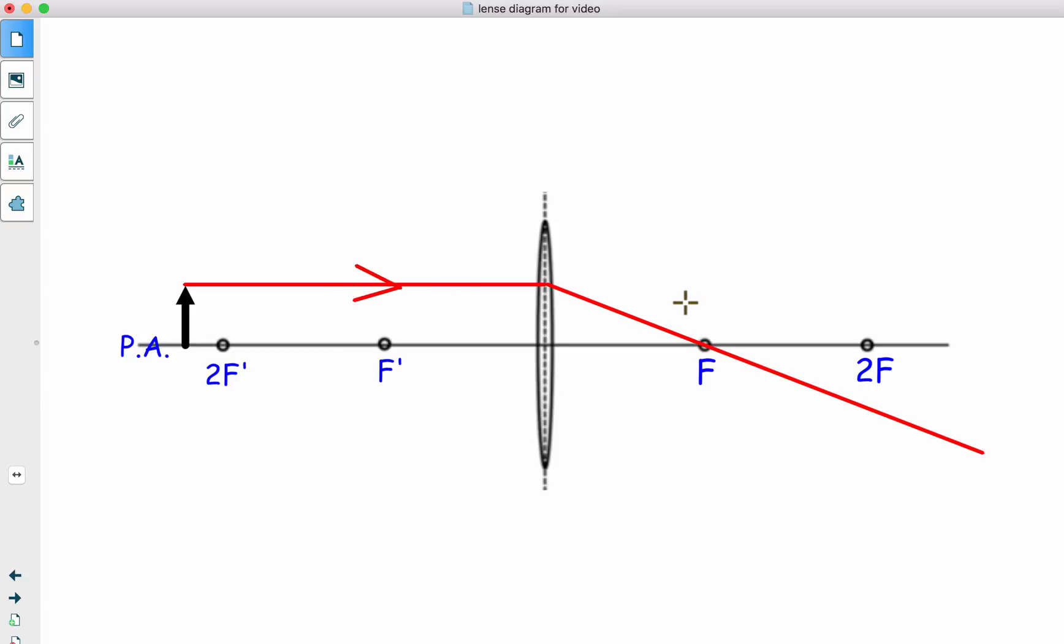Put your arrows. Make sure that you have them. Otherwise, these are not rays. So there's ray number one. Ray number two. From the tip of the object through F prime until you hit the optic center of the lens. Then it comes out parallel. Putting our arrows on.